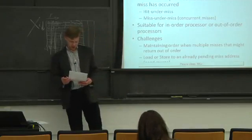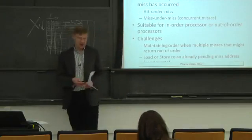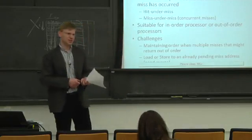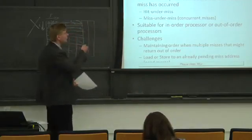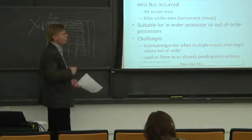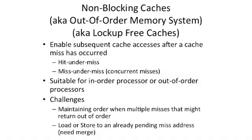Now we get to move on to the meat of today. We're going to talk about non-blocking caches, also known as out-of-order memory systems, also known as lockup-free caches. The first paper that actually published on this is called a lockup-free cache. Lots of people call these things non-blocking caches today. And if you think about it from a memory perspective, it's an out-of-order memory system.